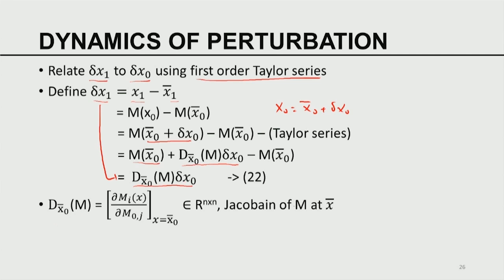Equation 22 shows that the perturbation at time 1 is linearly related to the perturbation at time 0 — even though the model is non-linear, the perturbation dynamics is linear. In general, δxₖ₊₁ = M(xₖ) - M(x̄ₖ). To first order, xₖ ≈ x̄ₖ + δxₖ, so applying the Taylor series gives δxₖ₊₁ = Aₖ·δxₖ, where Aₖ is the Jacobian of M at x̄ₖ. This dynamics is called the variational equation, perturbation equation, or in meteorological circles, the tangent linear system (TLS) — a linear but non-homogeneous system since Aₖ varies along the base trajectory.